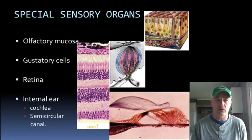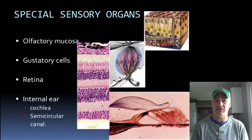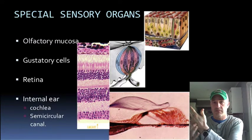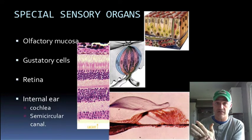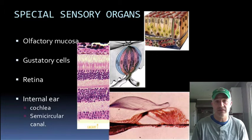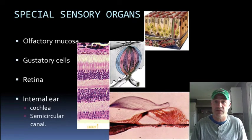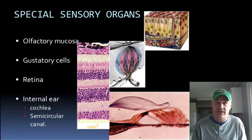Special sense organs are involved with one of the special senses. When we think about sense organs, you have what are called the general senses — often thought of as your sense of touch. But touch isn't just a single thing: there's touch, pressure, heat, cold, and pain — all different types of sensory receptors. General senses encompass a number of those different receptor subtypes.